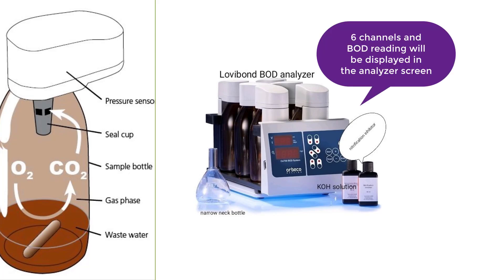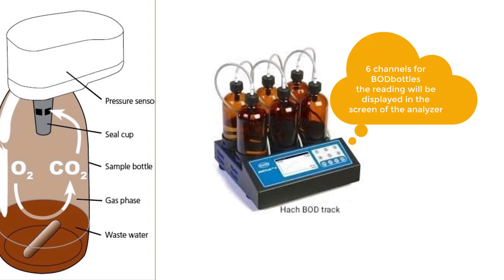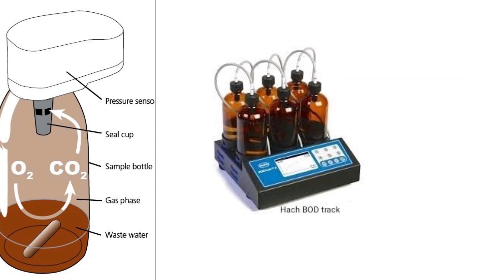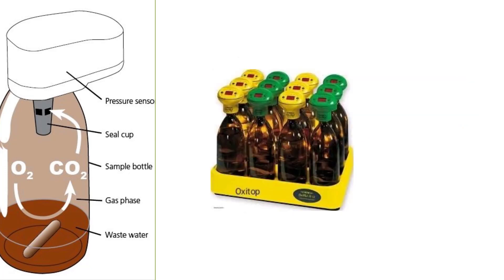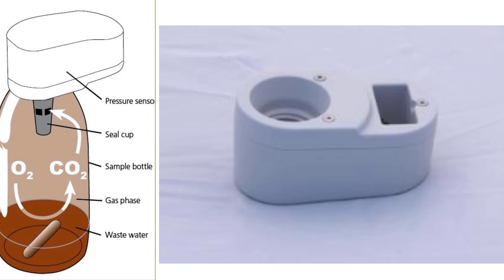I have selected a few BOD analyzers to share here. Starting with the Lovibond unit — it contains six channels and a display screen. The second one, from Hach company, also has around six channels and a display screen. The third one is from OxiTop company; it has around 12 channels and the BOD reading appears on the cover itself, which makes it a special one.